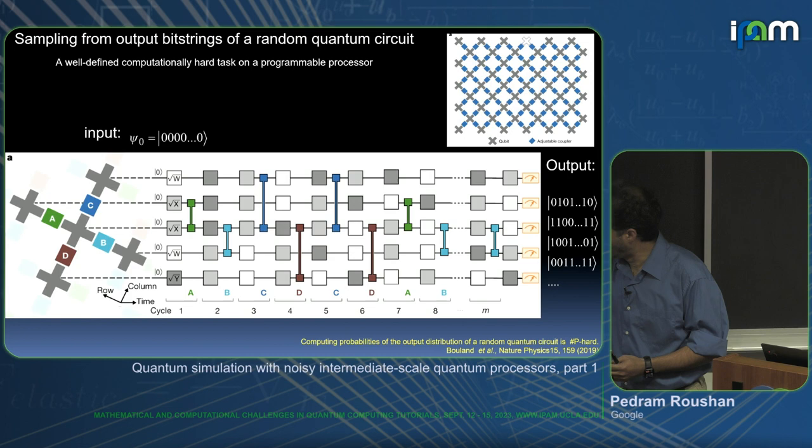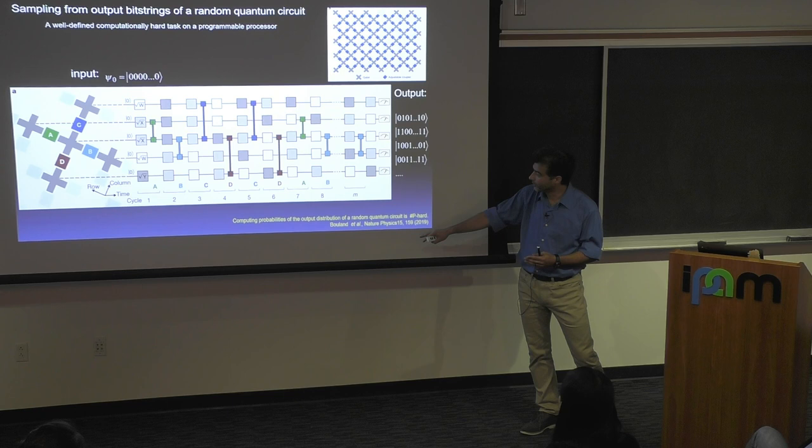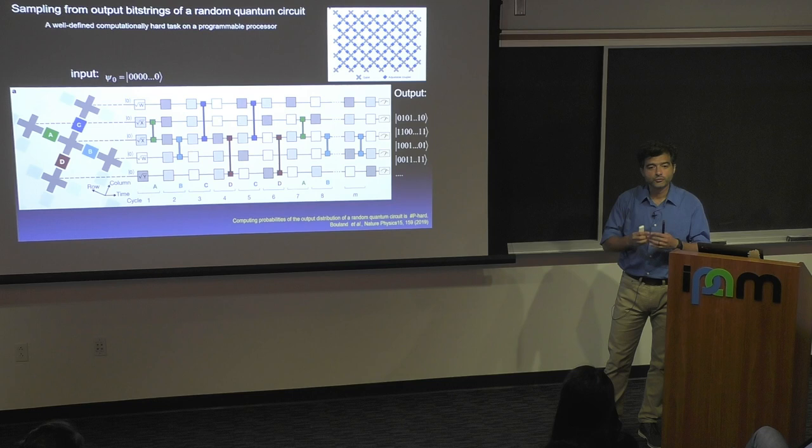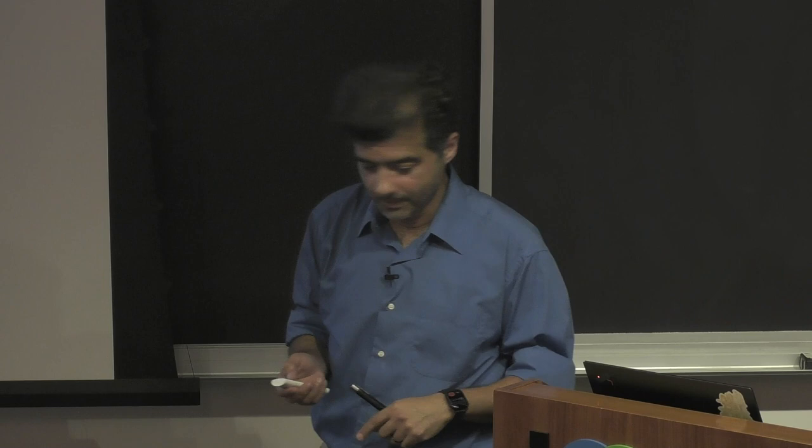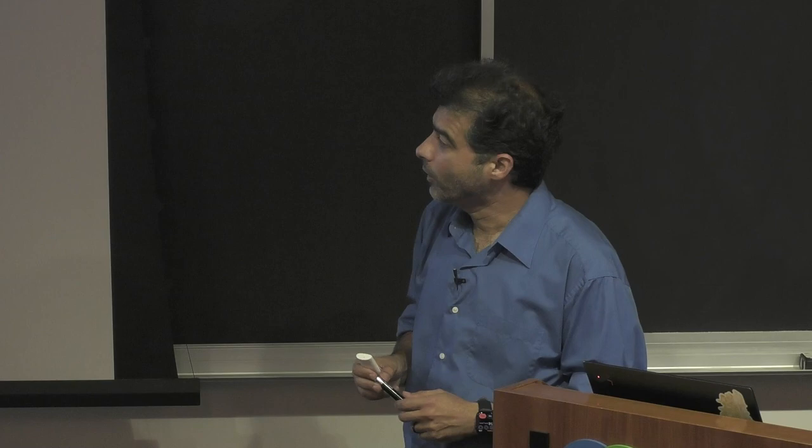The claim is that we can sample from this distribution faster than a supercomputer. A team has spent time proving that this task is actually genuinely hard — they found the computational complexity associated with it, and it is proven to be hard.